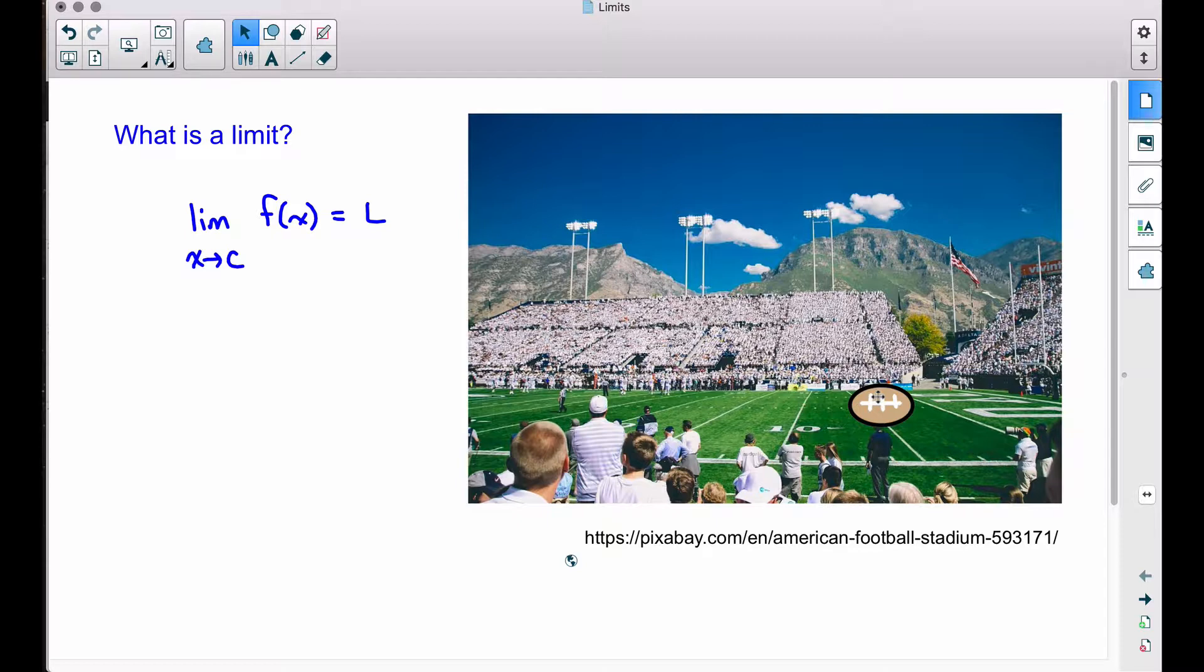Let's suppose the defense commits another penalty. Same repercussions here. The ball is going to be placed half the distance to the goal, so the ball is going to be placed on the 2-and-a-half-yard line. Now let's suppose the defense keeps screwing up over and over and over forever and ever and ever.